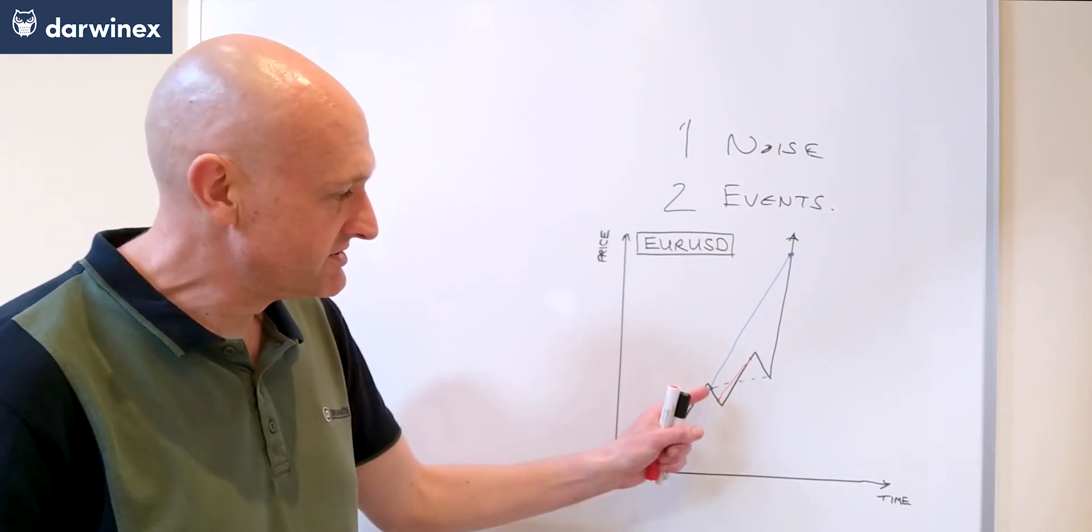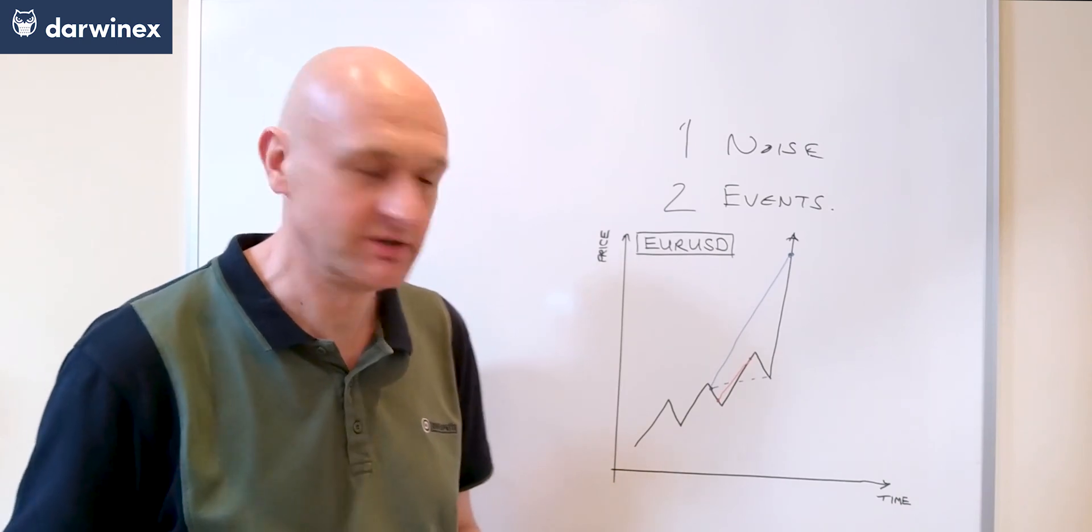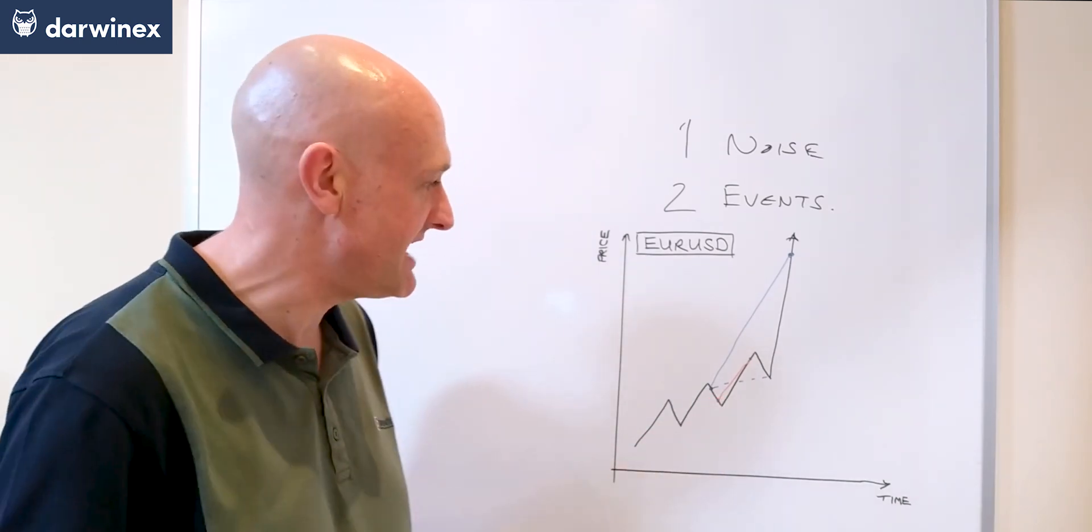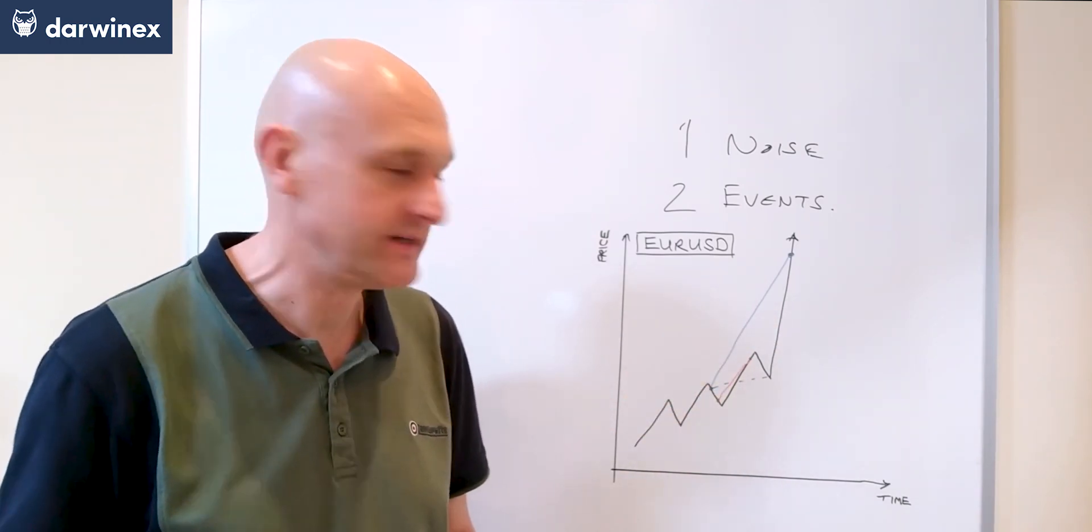So what looked as though it was a parameter set that wasn't trading the normal price action as effectively as the red parameter set here, all of a sudden gets a huge profitable trade.